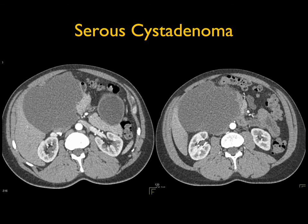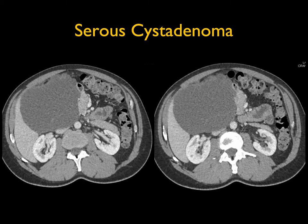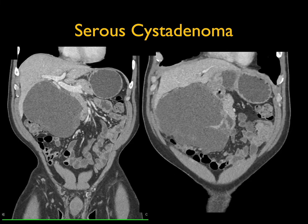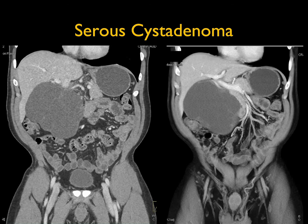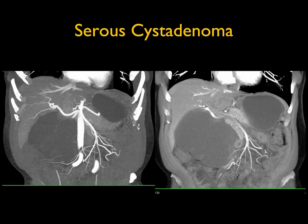Serous cystadenomas occur in patients around age 65; MCNs typically around age 45. Serous cystadenomas have a range of appearances — they can have septations, a Swiss cheese appearance, or be oligocystic like this case, with displacement of adjacent structures like vessels. They are always benign with no malignant potential and won't bleed, but can be symptomatic due to mass effect, so as they get larger they're often resected. A really nice example of a classic serous cystadenoma displacing vessels on the arterial mapping.